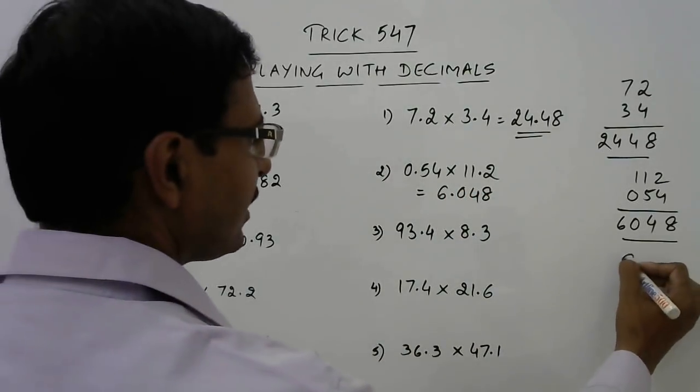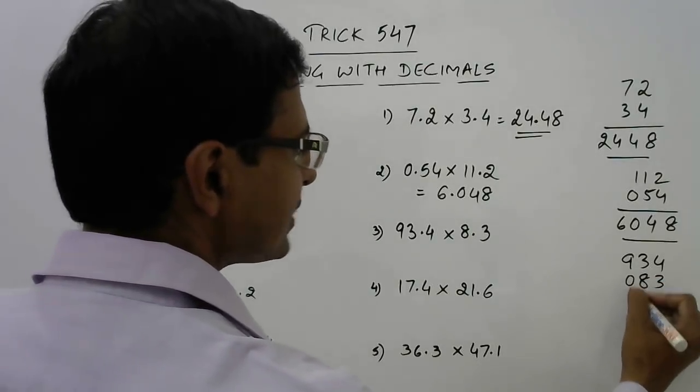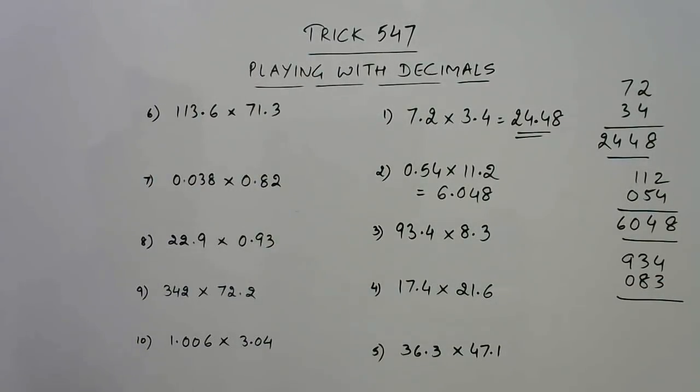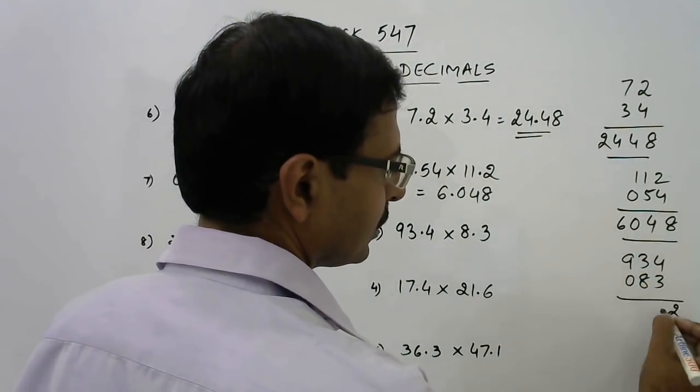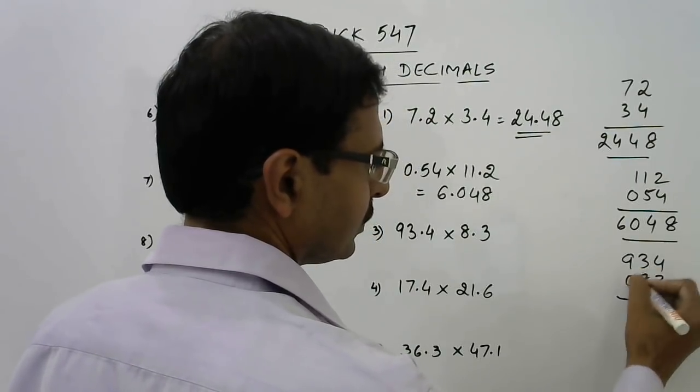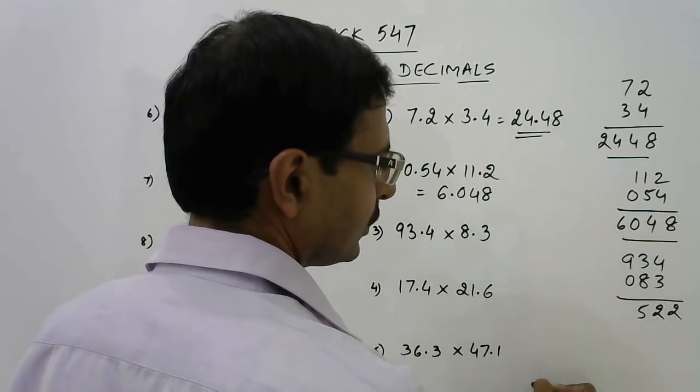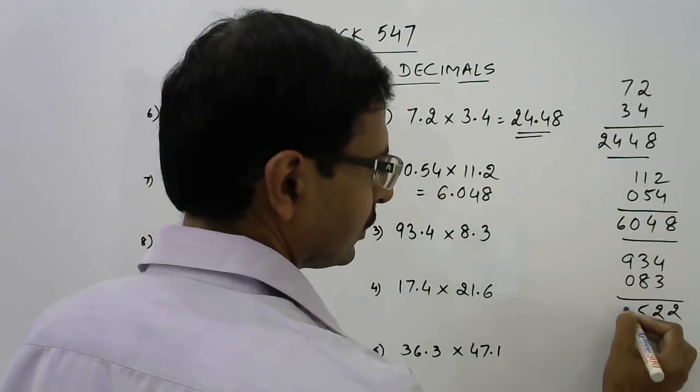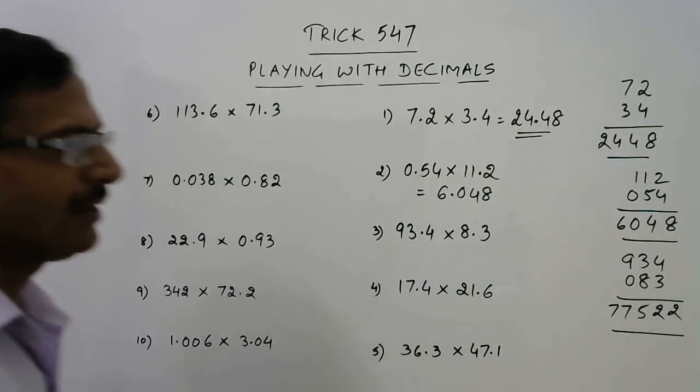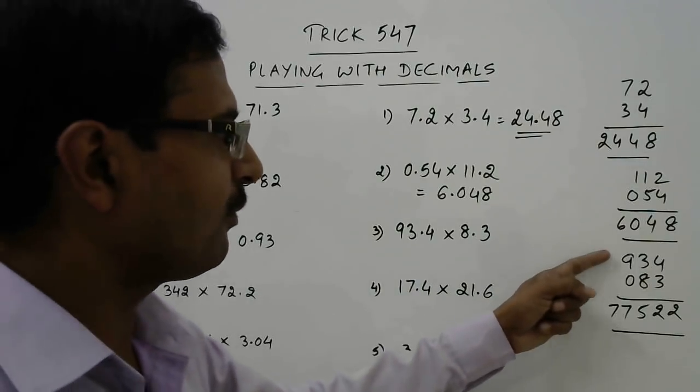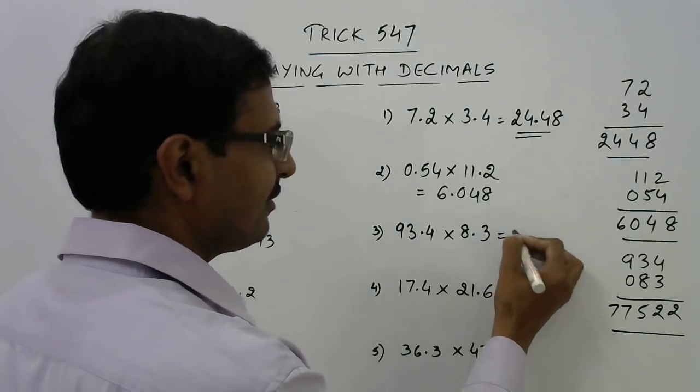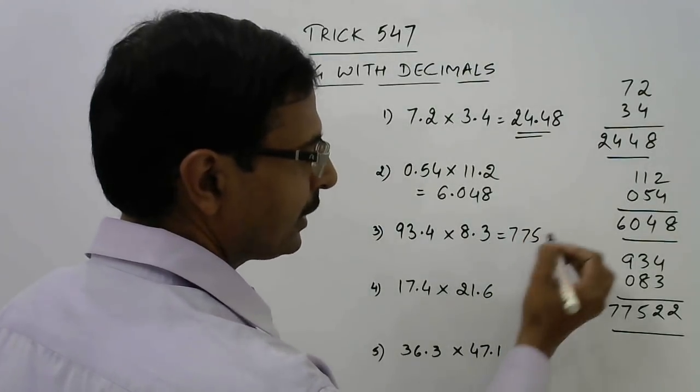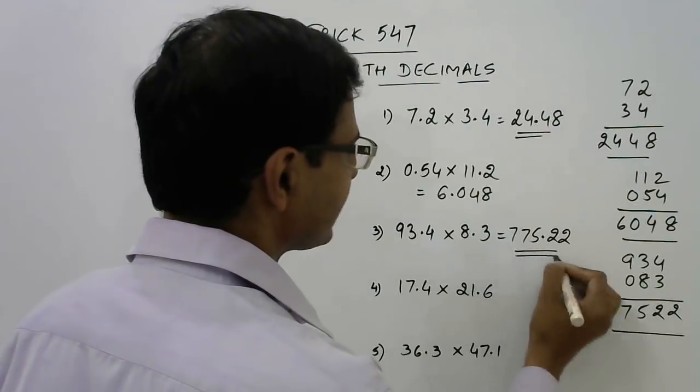Likewise, 934 and 83, and I will put a 0 here. We can use the same method of vertically and crosswise here also. The product of 934 and 83 is 77522, and with the decimal 1 and 3 placed, 775.22 is the product of these numbers.